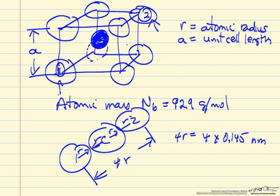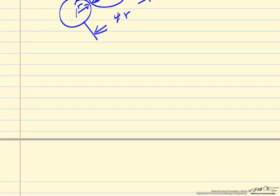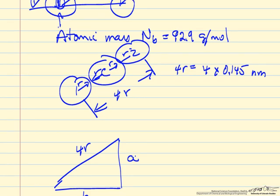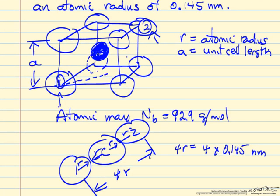And what we want to do from geometry, if we know that dimension, calculate the dimension of A. So we're just going to use Pythagorean theorem to do the calculation. So I've drawn a right triangle, where 4R is this diagonal dimension, A is the unit cell dimension, and H then is this dimension.